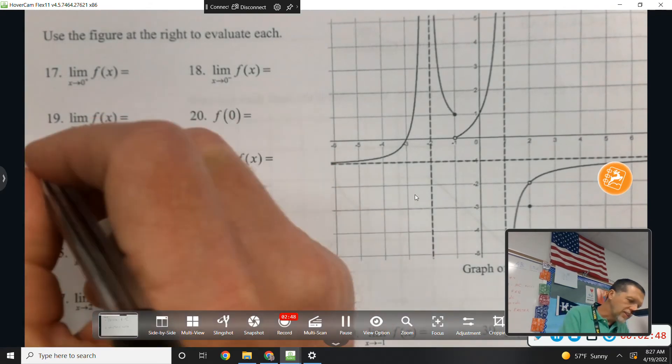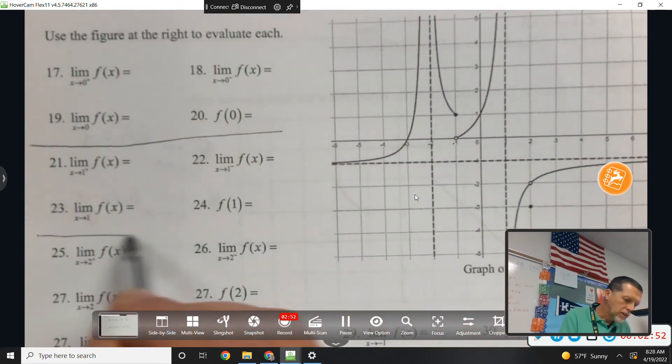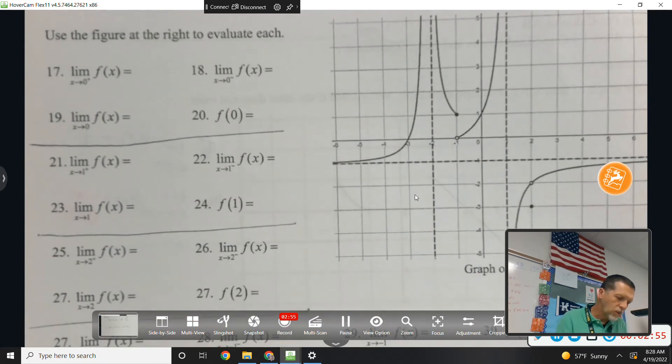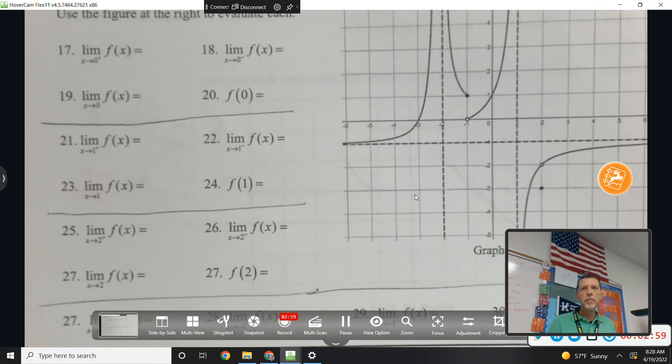Anything from 17 through 30? And again, they're kind of grouped. Like what's going on at 0, what's going on at positive 1, what's going on at 2, and then what's going on at negative 1. Left, right, overall, and then the function.